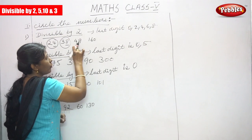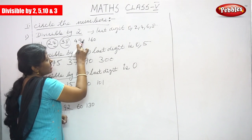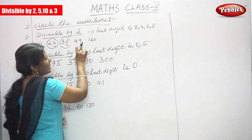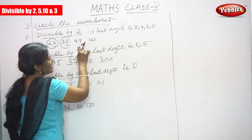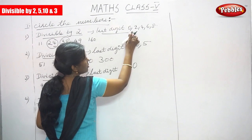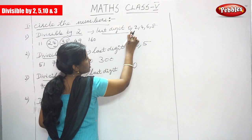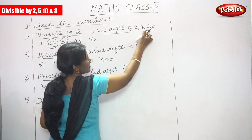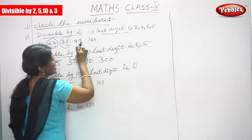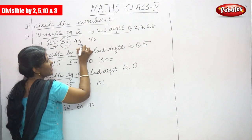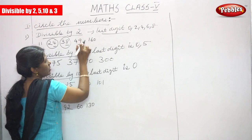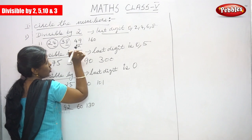Next, 49 — the last digit is 9. But this number does not end with the rules of 2: 0, 2, 4, 6, 8. The last digit is 9, so it is not divisible by 2. So it is wrong.